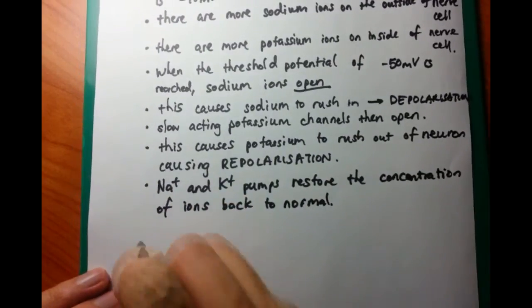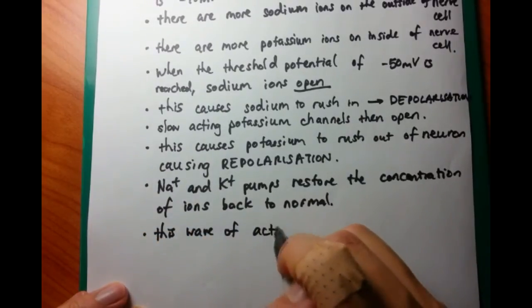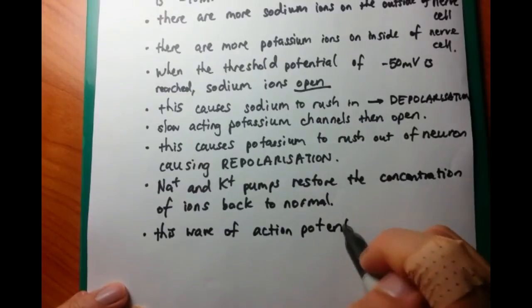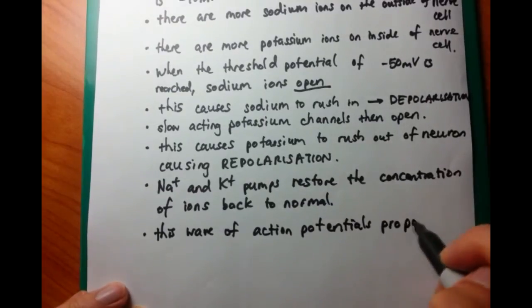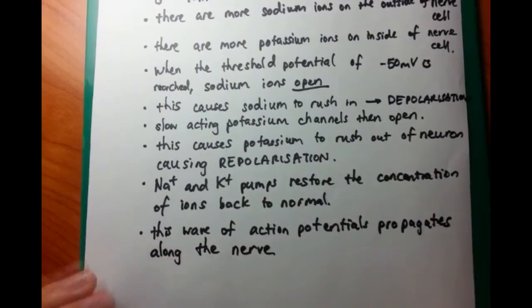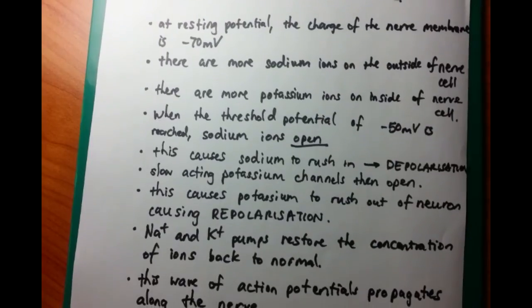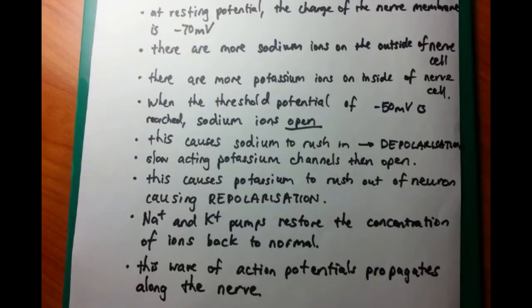what happens after that is that the sodium and potassium reverse. So every time something happens, in order to restore it back to normal, the reverse has to happen using sodium-potassium pumps. The final thing is that this action potential propagates along the nerve, and this causes the nerve signal to travel along the axon.